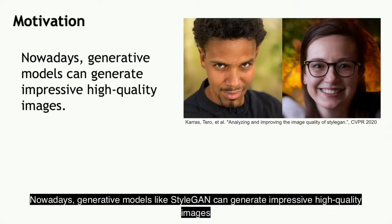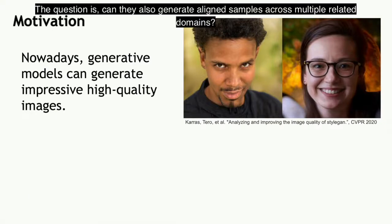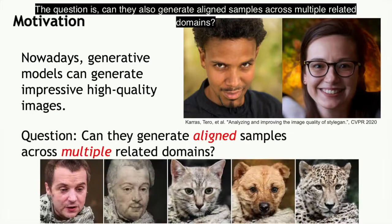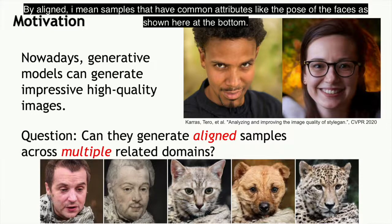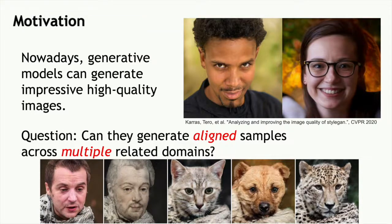Nowadays, generative models like StyleGAN can generate impressive high-quality images. The question is: can they also generate aligned samples across multiple related domains? By aligned, I mean samples that have common attributes like the pose of the faces, as shown here at the bottom.